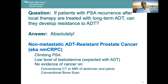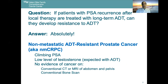NM-CRPC is defined as patients who have a climbing PSA only, no evidence of cancer on conventional CAT scan or MRI of the abdomen and pelvis, or on bone scan, and a low testosterone level. This definition is based on conventional imaging — not fluciclovine PET, not PSMA PET — really just conventional imaging.